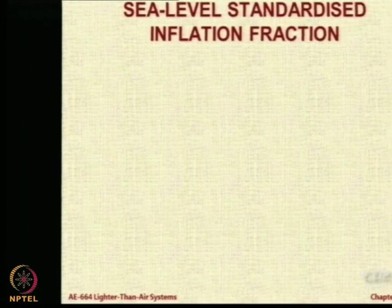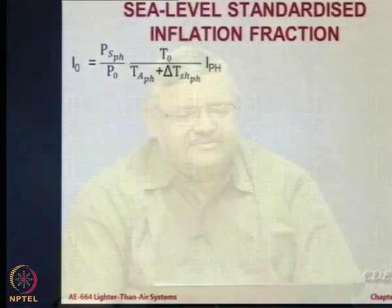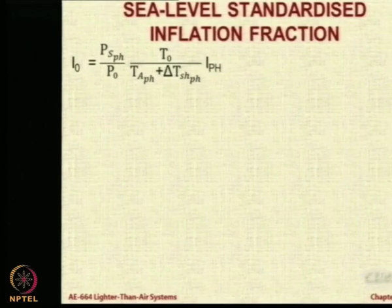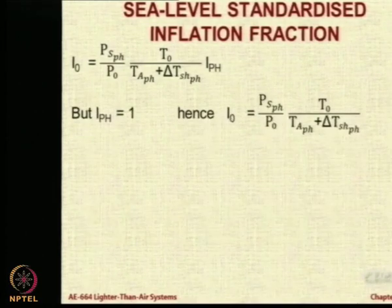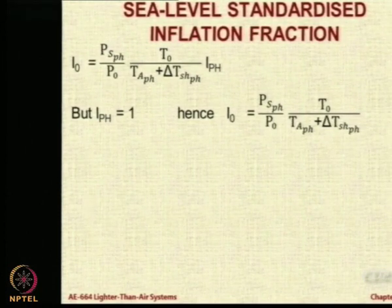Let us look into this a bit more deeply. I am replacing the previous expression, calling it I0 and IPH, where IPH stands for the inflation fraction at pressure altitude (pressure height), and I0 as the inflation fraction at sea level (ground condition). IPH is equal to 1 because at pressure altitude the brina becomes flush. Therefore, I0 = (PSPH / P0) × (T0 / T_superheat).